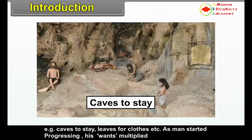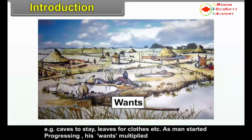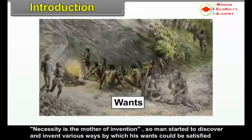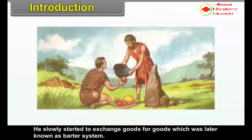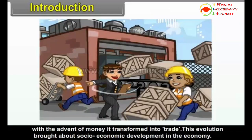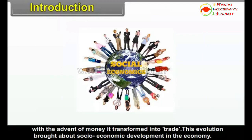For example, caves to stay, leaves for clothes, etc. As man started progressing, his wants multiplied. Necessity is the mother of invention, so man started to discover and invent various ways by which his wants could be satisfied from the available resources. He slowly started to exchange goods for goods, which was later known as the barter system. With the advent of money, it transformed into trade. This evolution brought about socio-economic development in the economy.